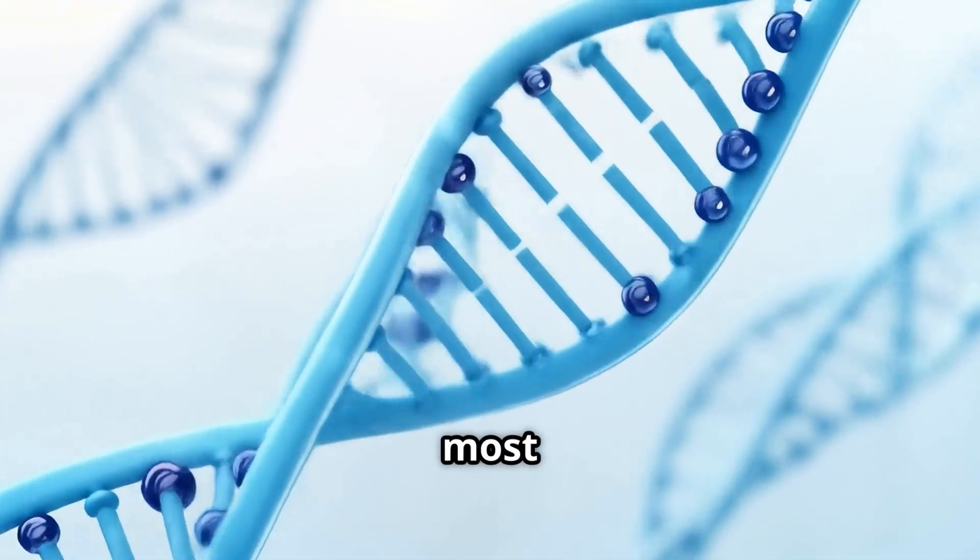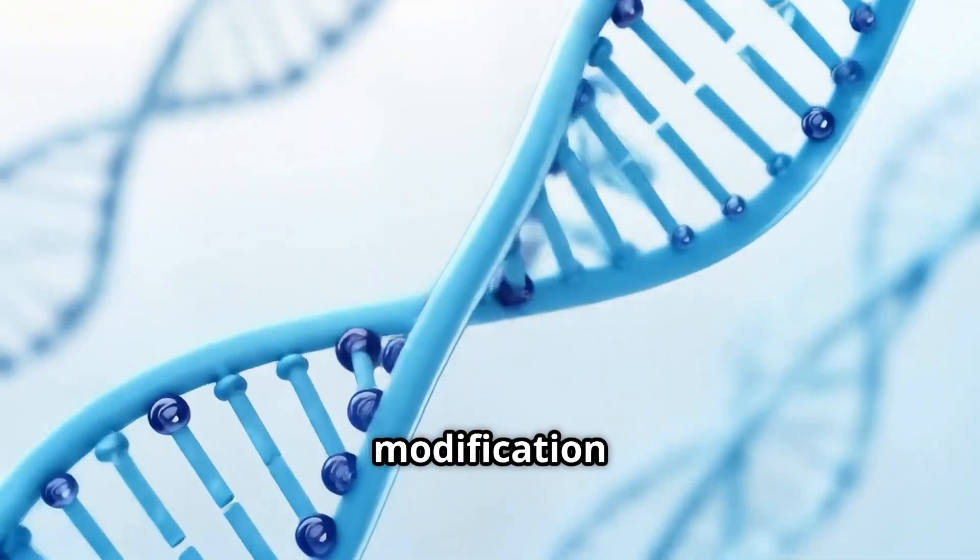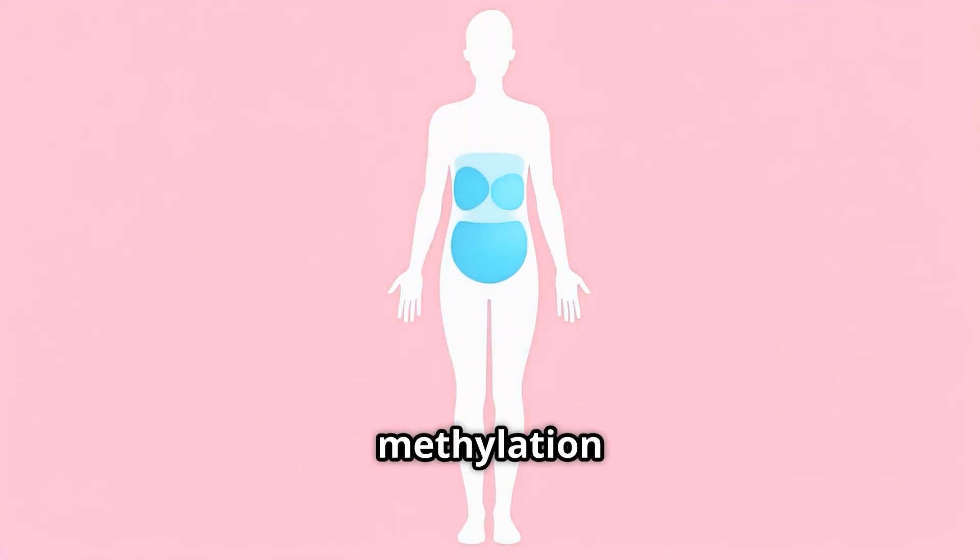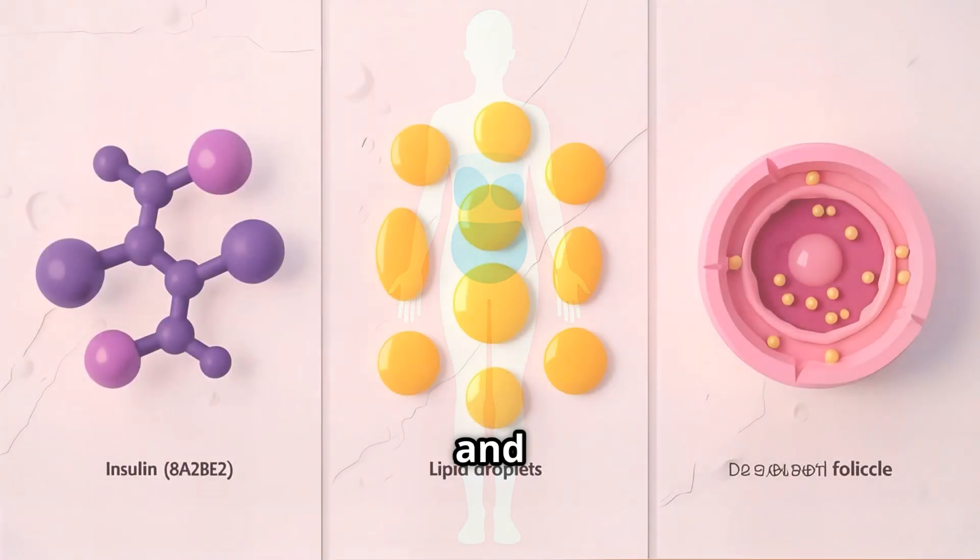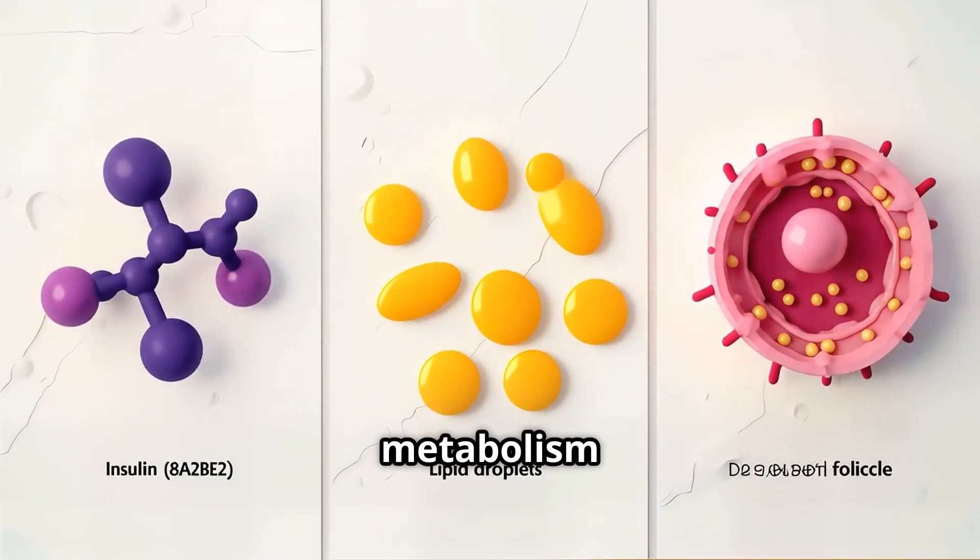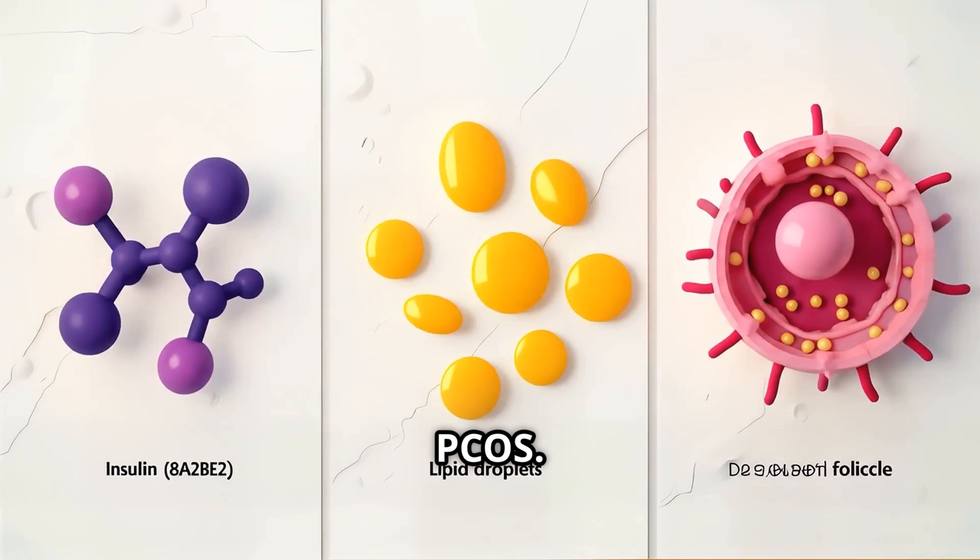DNA methylation is the most widely studied epigenetic modification in PCOS. At present, changes of DNA methylation have been found in serum, ovarian, hypothalamus, skeletal muscle, and adipose tissue of PCOS patients, and these changes are closely related to insulin resistance, lipid metabolism, and follicular development of PCOS.